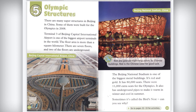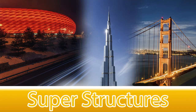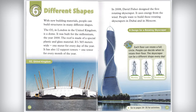With new building materials, people can build structures in many different shapes. The O2 in London, United Kingdom, is a dome. It was built for the millennium — the year 2000. The roof is made of a special plastic and glass material. It's 365 meters wide — one meter for every day of the year. It also has 12 support towers, one tower for every month of the year.